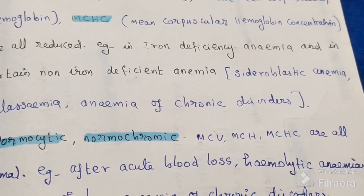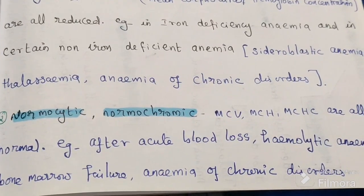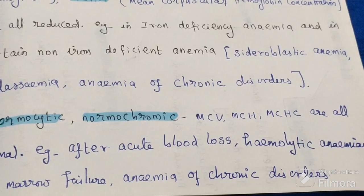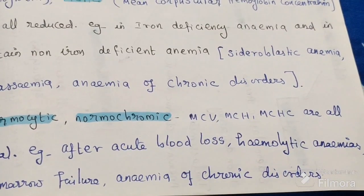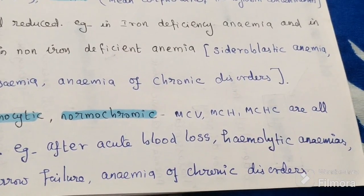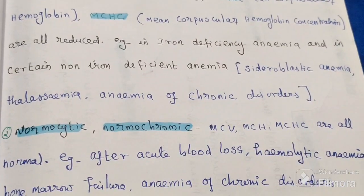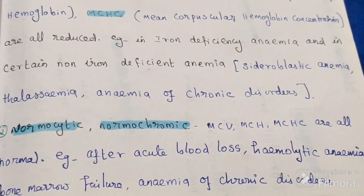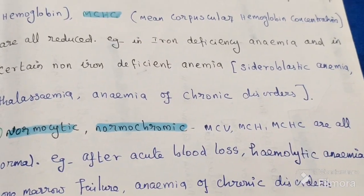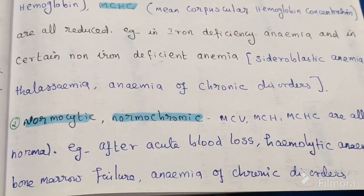The second type is normocytic normochromic anemia, where MCV, MCH, and MCHC are all normal. Examples include anemia after acute blood loss due to accident, hemolytic anemia, and bone marrow failure.